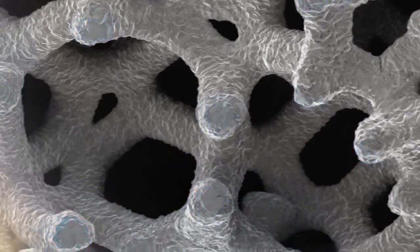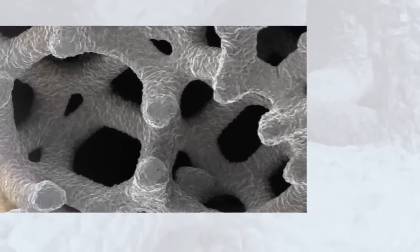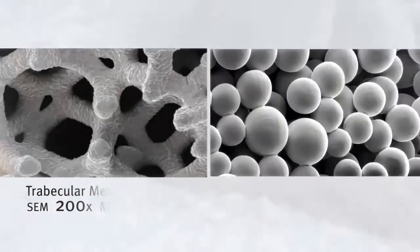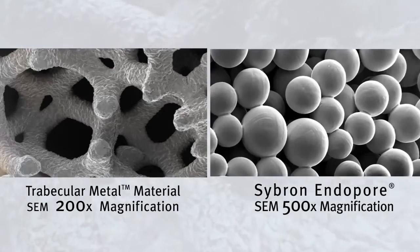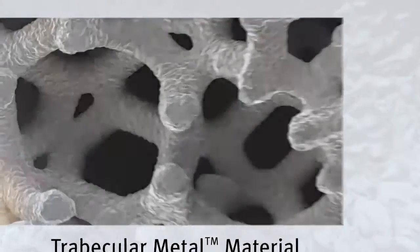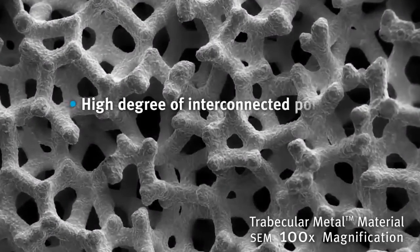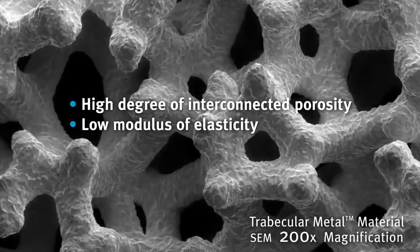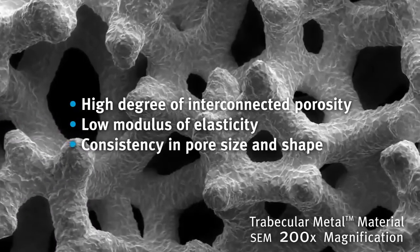While other manufacturers have tried to mimic the attributes of trabecular metal technology, sintered bead and other conventional porous coatings and materials differ significantly from trabecular metal material's high degree of interconnected porosity, low modulus of elasticity, and consistency in pore size and shape.